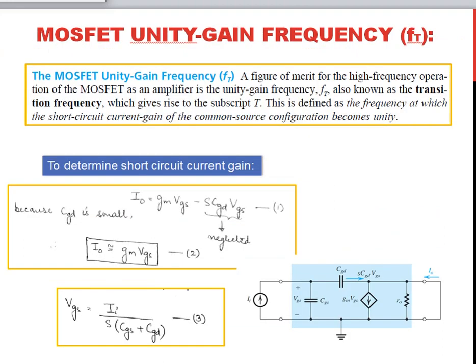MOSFET unity gain frequency, FT, is a figure of merit for high frequency operation of the MOSFET, also known as the transition frequency. It is defined as the frequency at which the short circuit current gain of the common source configuration becomes unity.